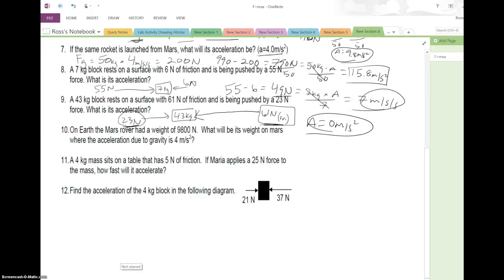On earth, the Mars Rover—don't get confused, it's the Mars Rover, that's the name of it, but it's on earth—the Mars Rover had a weight of 9,800 newtons. What will be its weight on Mars where the acceleration due to gravity is 4 meters per second squared? Once again, we're dealing with weight. The weight of the Rover on earth is 9,800 newtons. Remember, weight is force due to gravity. 9,800 newtons is equal to m times the acceleration on earth, 10 meters per second squared. If we divide both sides by 10, we get 980 kilograms. That's the mass of the Rover. Now we need to find the mass because weight changes whether you're on the moon, Mars, or earth.